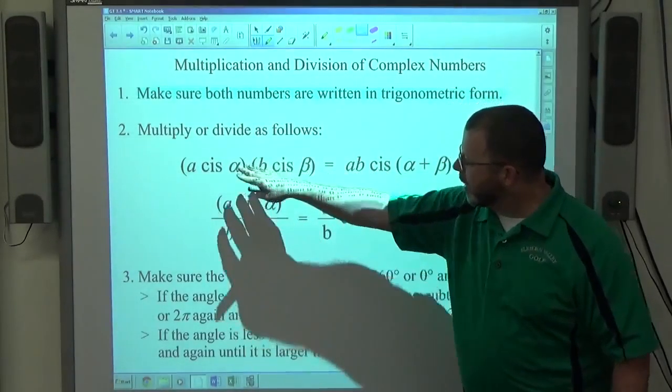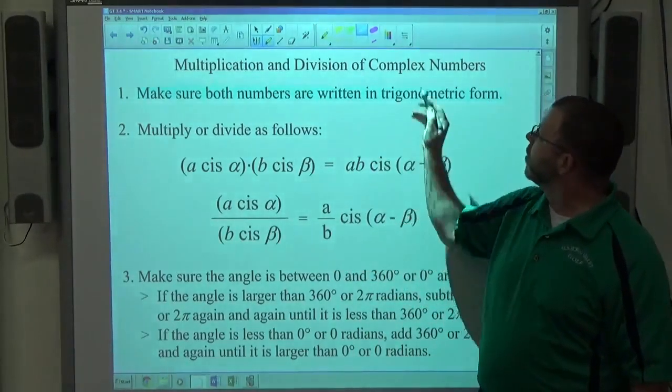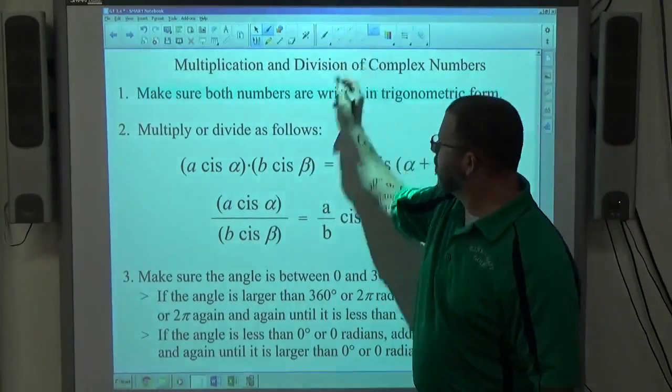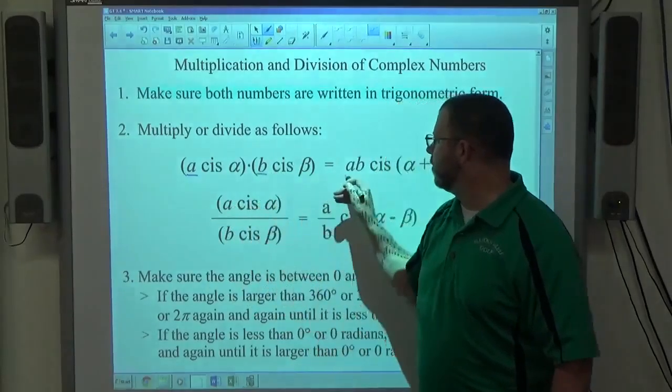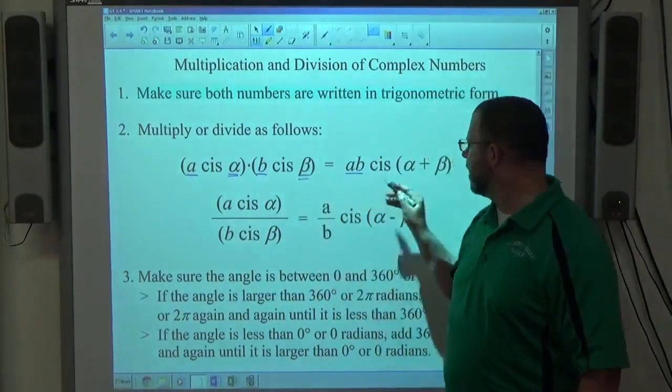We're going to either multiply or divide trigonometric structures, and all you have to do to multiply is real simple. You're going to multiply the magnitudes to get the new magnitude. You're going to add the angles to get the new angle.